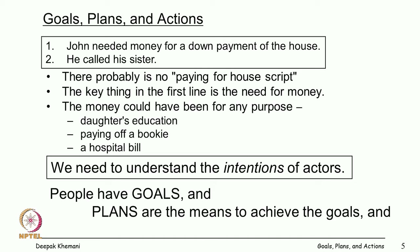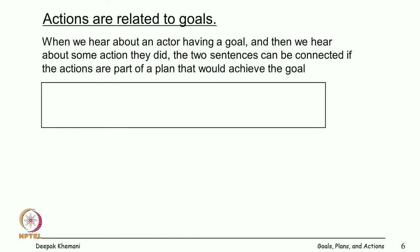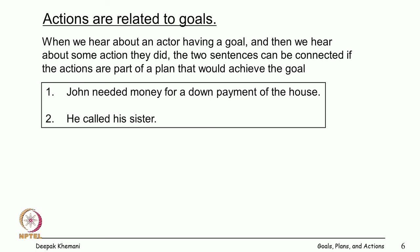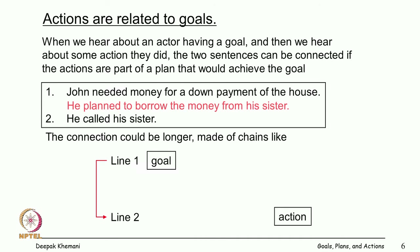People have goals, people have plans which are means to achieve those goals, and people do actions in the real world which are part of those plans. If you are hungry, you may have certain plans — go to the canteen, cook yourself, etc. So in the John story, we can infer that he has a plan to borrow money from his sister. Actions are related to plans and plans are related to goals.